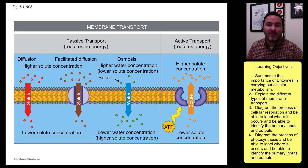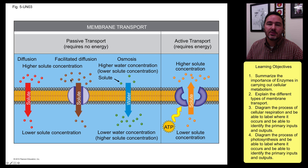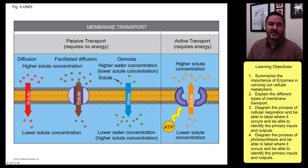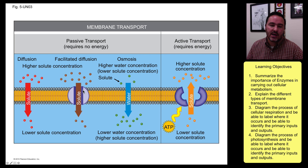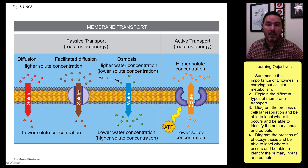The second type of passive transport is facilitated diffusion. Again, molecules move from high concentrations to low concentrations, but they're unable to do this freely across the membrane. So the membrane has channels that help facilitate the diffusion — these channels are usually membrane proteins.